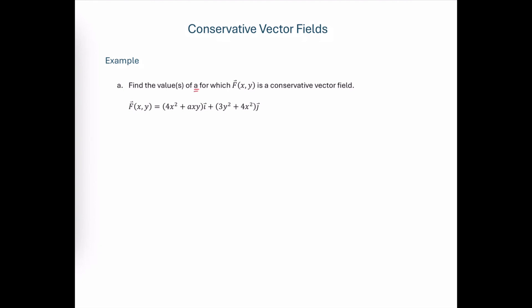Find the values of a that would make this vector field a conservative vector field. Recall that for any vector field where the components are functions of x and y, if the vector field is conservative, then the first partial of P with respect to y will equal the first partial of Q with respect to x.